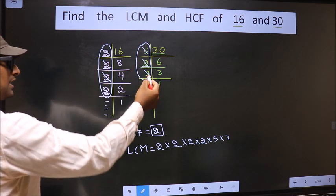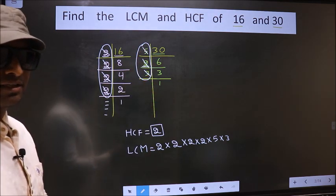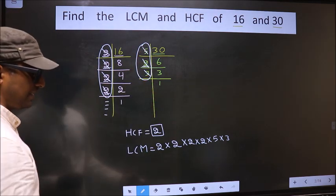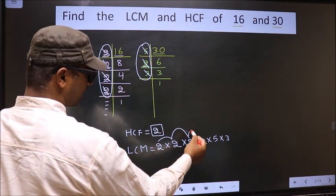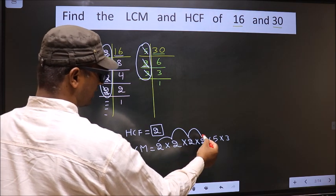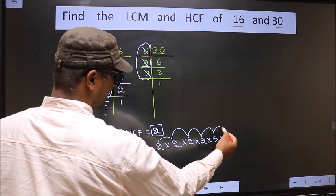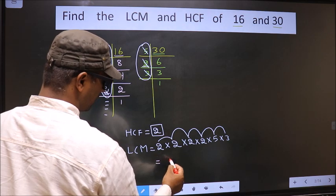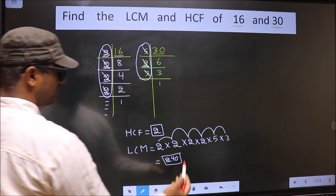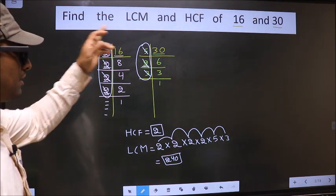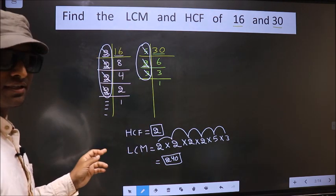Now each number has been cut. So our LCM is 2 into 2, 4 into 2, 8 into 2, 16 into 5, 80 into 3, 240. So 240 is our LCM. Am I clear? Here we are.